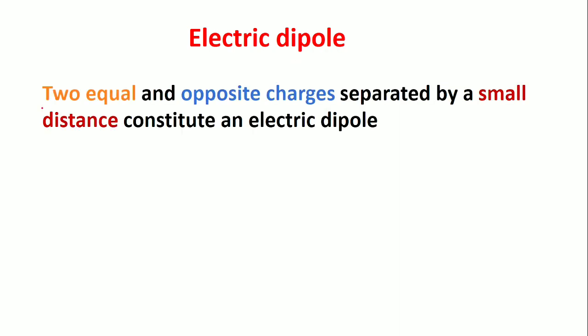The definition: two equal and opposite charges separated by a small distance. Consider two charges, one negative charge and one positive charge of equal magnitude Q, but opposite charges, minus charge and plus charge.